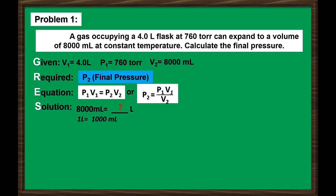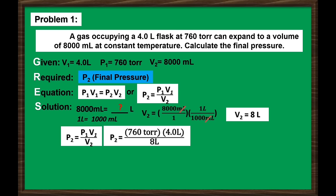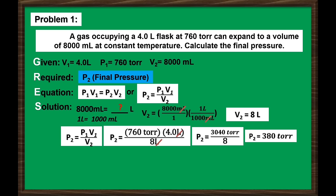Remember, 1 liter is equal to 1,000 milliliters, so the value of the final volume in liters is 8 liters. Since the units of initial and final volume are the same, we can substitute into our derived equation: final pressure equals 760 torr × 4.0 liters ÷ 8 liters. We can cancel the unit liters, leaving torr as our unit. So, 3040 ÷ 8 gives a final pressure of 380 torr. Since the volume expanded, the pressure decreased from 760 torr to 380 torr. This can happen only if the amount of gas and temperature are constant.